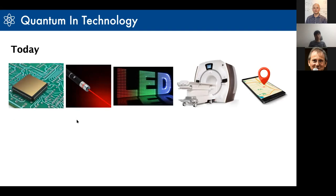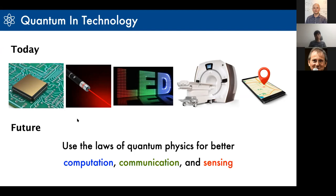Last week we talked about quantum information processing. Whether we know it or not, we are surrounded by technologies already based on quantum effects. In the future, we want to go further and use the laws of quantum physics to improve computation, communication, and sensing. In this mini school, I'm focusing specifically on how quantum physics could improve computation.